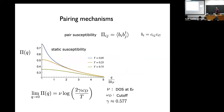We're interested in the pairing mechanism of such states. If you look at the pair susceptibility — where B is a pair of fermions — in a translationally invariant system it only depends on i minus j, and its static Fourier transform as a function of q (the center of mass momentum of the pairs) is positive definite. It is peaked at q equals zero; that peak is the celebrated logarithmic divergence of BCS, which in the limit as q goes to zero is just the density of states times some constants involving the cutoff and the temperature.